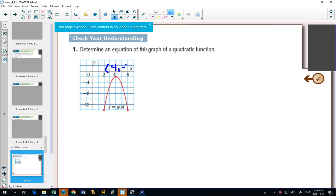4 comma negative 2. And if we go over 1, how many do we go down? 1, 2, this point right there. Look on your graph. You would go over 1 and then you're going down. It looks like 1 and a half, but check your scale here.